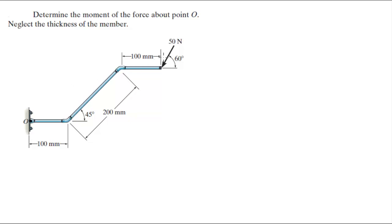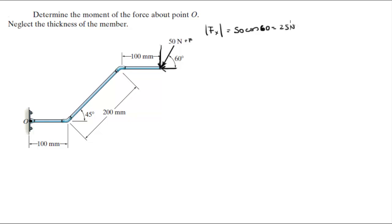We have point O and the force shown. The first thing to do is calculate the x and y components of the force. The x-component is 50 cosine of 60°, which equals 25 newtons. The y-component is 50 sine of 60°, which equals 43.3 newtons. The 60° angle is given in the diagram.